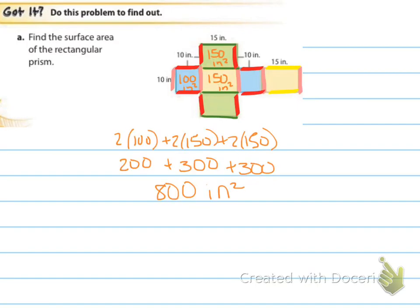Alright, so here's the answer for A. I found the area of each one using different colors to show which sides correspond. I used the sides to demonstrate which one goes with what — these are the same, and these are the same in pink. I try to color code for my congruent sides so you know those are all the same. Each of these edges are ten, and the fifteen measurements repeat on their respective faces. So all together, it's 800 inches squared.